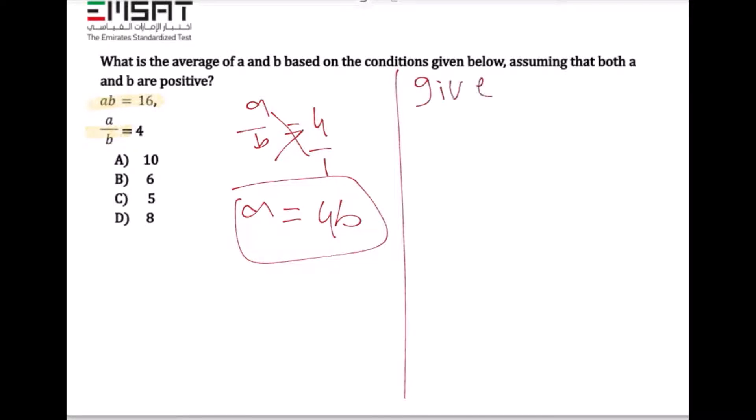The given condition is ab equals 16. Since a is 4b, we can substitute: 4b times b equals 4b squared, which will equal 16.